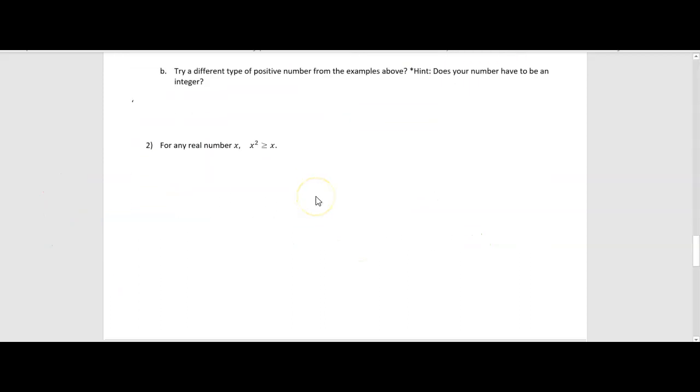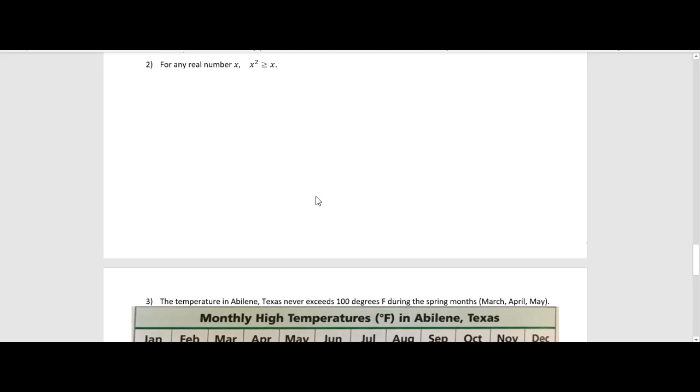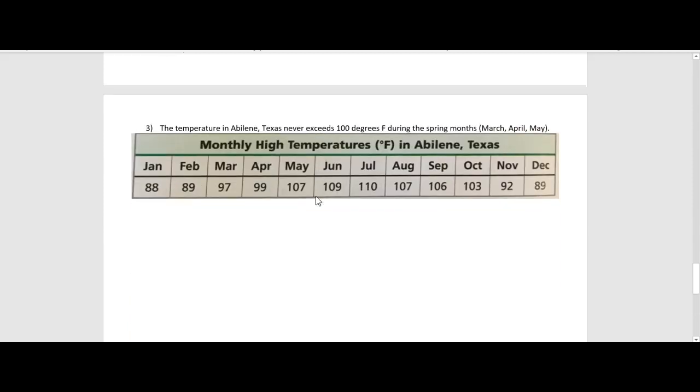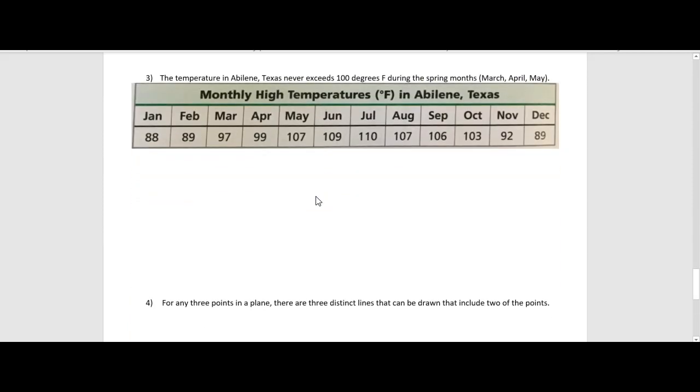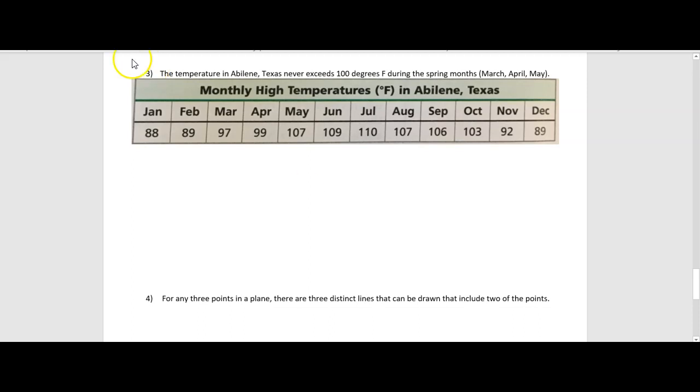I'm going to skip number two. Let's look real quick at the graph. So it says the temperature in Abilene, Texas, never exceeds 100 degrees Fahrenheit during the spring months, which are March, April, and May. So that's a conjecture. But do we have data to show that that's false? Well, let's check the three months they're talking about, March, April, and May. March, we're good. It's less than 100. April, we're good. It's less than 100.